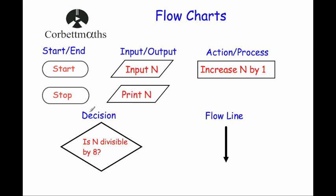Decision. When you get to a decision it'll be a rhombus like this, and you'll have to decide which path to take. For instance, this one says 'is n divisible by 8?' — there'll be one path for yes and one path for no and you'll decide which way to go. Finally, there are flow lines — lines with arrows which tell you which direction to go.